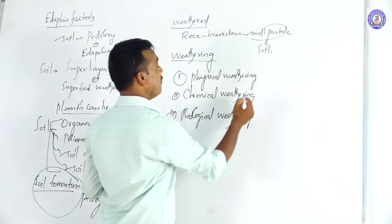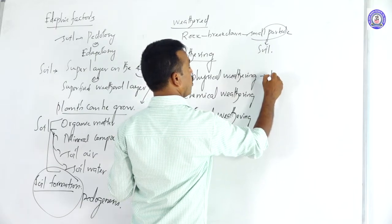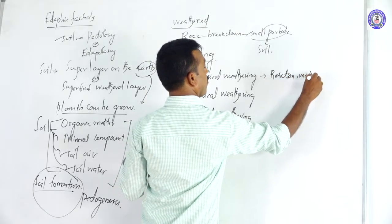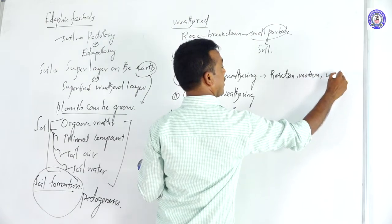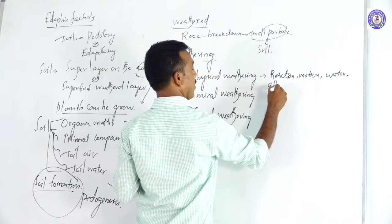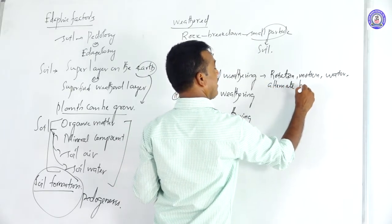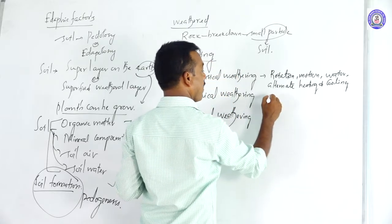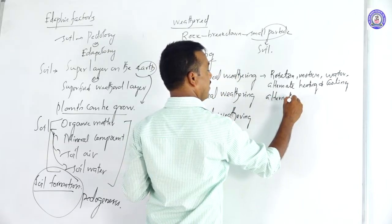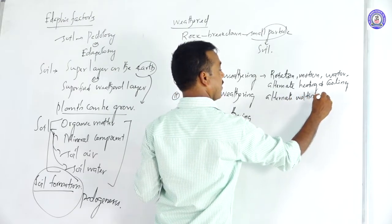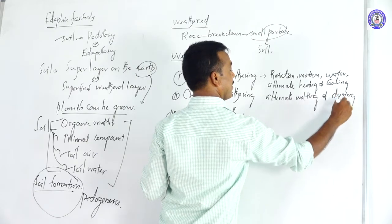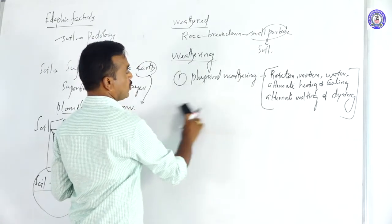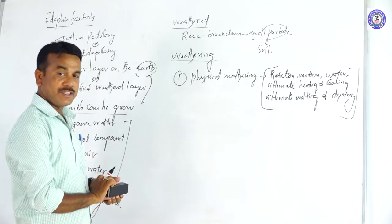Physical weathering is always accompanied with rotation, motions, and water. Alternate heating and cooling, alternate wetting and drying, result in rock particles being broken down into small particles — that is commonly called physical weathering.